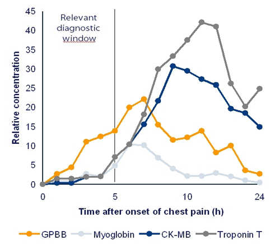In ecotoxicology, biomarkers are used to indicate an exposure to or the effect of xenobiotics, which are present in the environment and in organisms. The biomarker may be an external substance itself, e.g. asbestos particles or NNK from tobacco, or a variant of the external substance processed by the body that usually can be quantified.